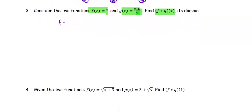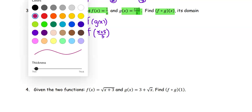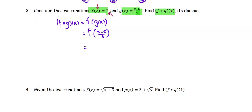f(g(x)) is the same as f of the input g(x). The function g(x) is (x + 5)/3. Now we use the expression (x + 5)/3 as the input of the function f. From the given function f, the input is x, and we take the reciprocal of the input. Right now, the input of f is the expression (x + 5)/3.